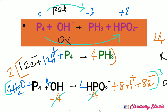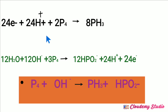After multiplying the reduction half-reaction by 2: 24 electrons, 24 H⁺, 2 phosphorus, and 8 phosphine. After multiplying the oxidation half-reaction by 3: 12 water, 3 phosphorus, 12 hydroxide ions, 12 hydrogen phosphite ions, 24 hydrogen ions, and 24 electrons. Both scaled half-reactions are now written.